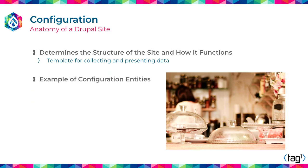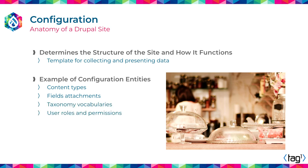In Drupal, there are two types of configuration. One is called configuration entities. In here, you have content types, fields attached to those content types, taxonomy vocabularies, user roles and permissions, and views. This is the one related to presenting information.